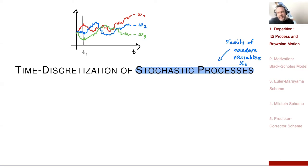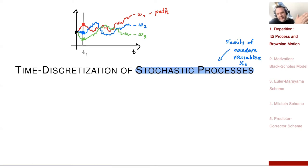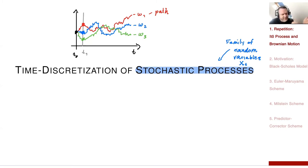All the paths have the same starting point. The stochastic process starts at x(t_0). Here x(t_0) is not random — it's deterministic, it's a constant value. So that is the initial value.